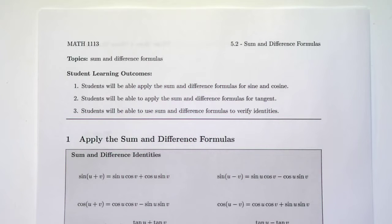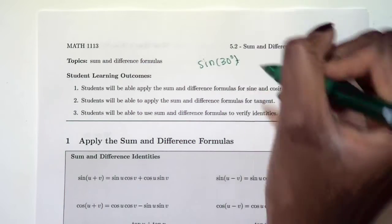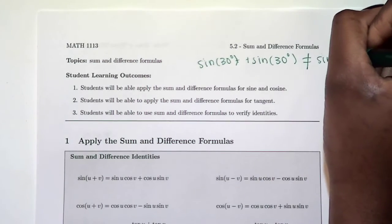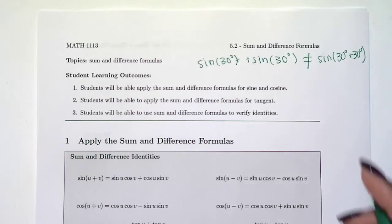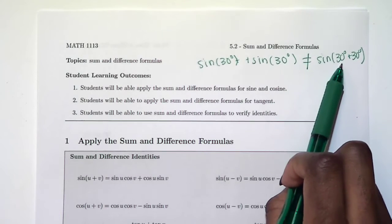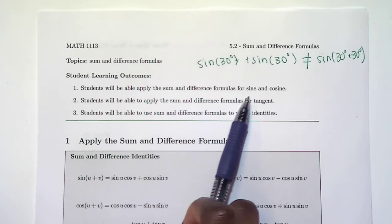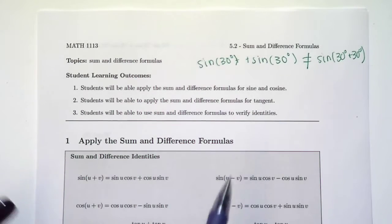So now we're in section 5.2, and 5.2 is sum and difference formulas. We're going to talk about how we can add or subtract inside of a trig function. We've seen before on a worksheet that sine of 30 degrees plus sine of 30 degrees is not the same as sine of 30 degrees plus 30 degrees. These are different, and we're actually going to get a formula to help us figure out what it actually is. For today's lesson, you'll be able to apply the sum and difference formulas for sine, cosine, and tangent, and then use these formulas to verify identities.